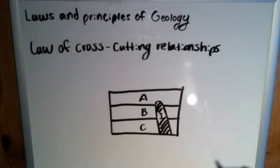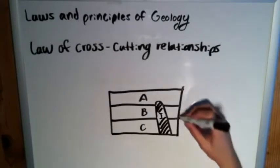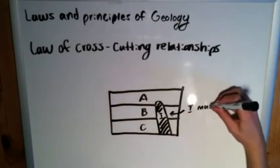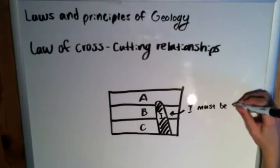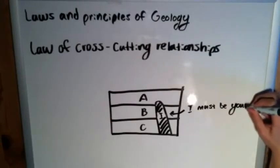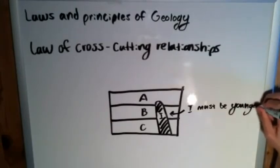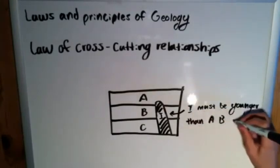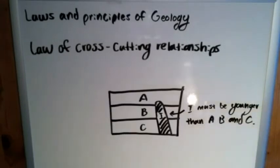And what this can tell you is that I is, since it cuts through all of these, I must be, excuse me, younger than all three: A, B, and C. Because it cuts over them and you see, you can see it overlying the other layers, then we know that it must be younger. The intrusion was an event that occurred after the deposition of A, B, and C.